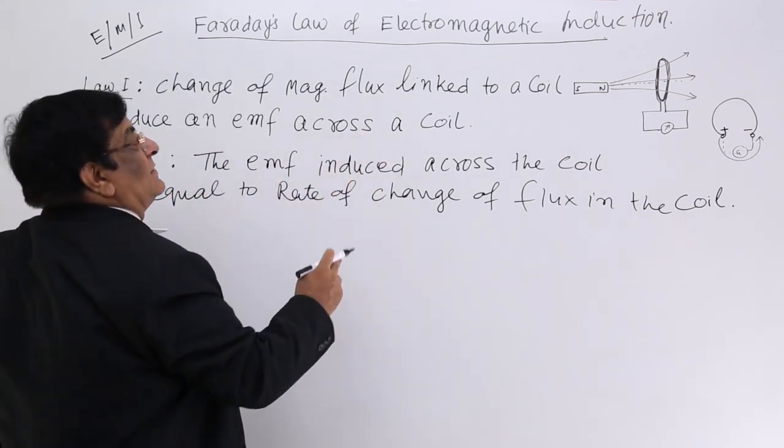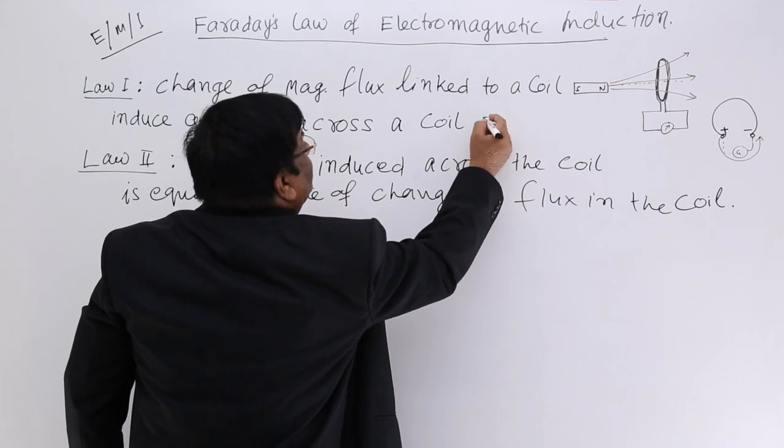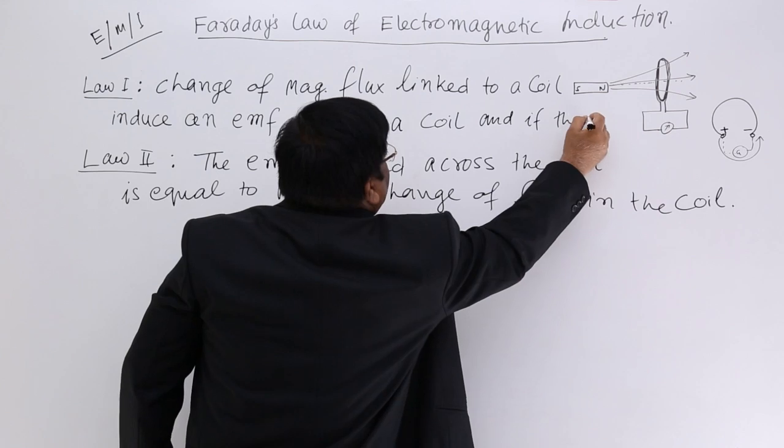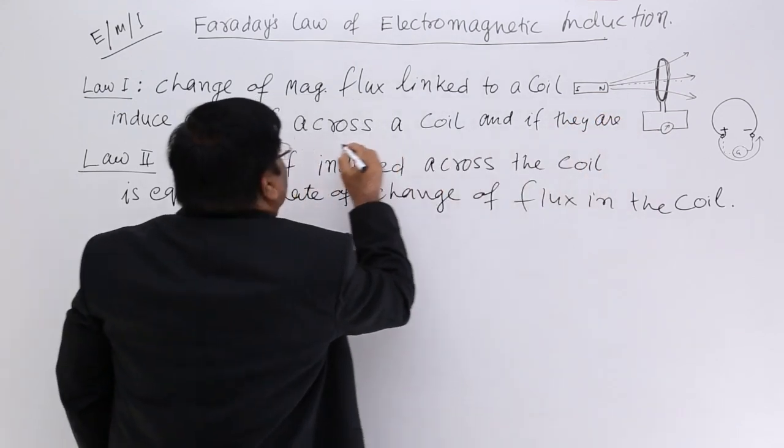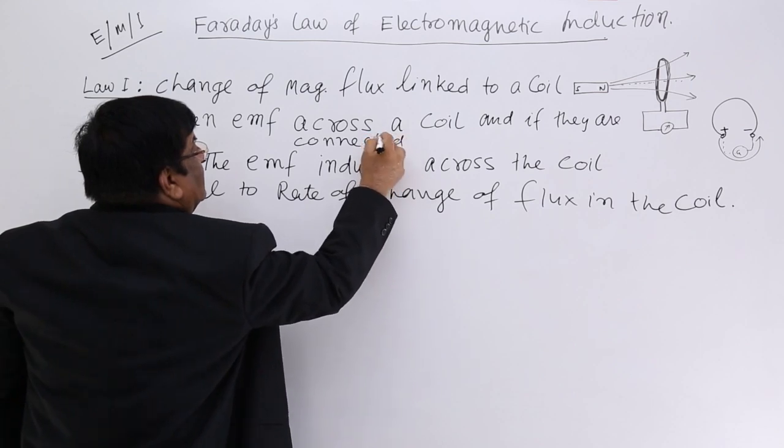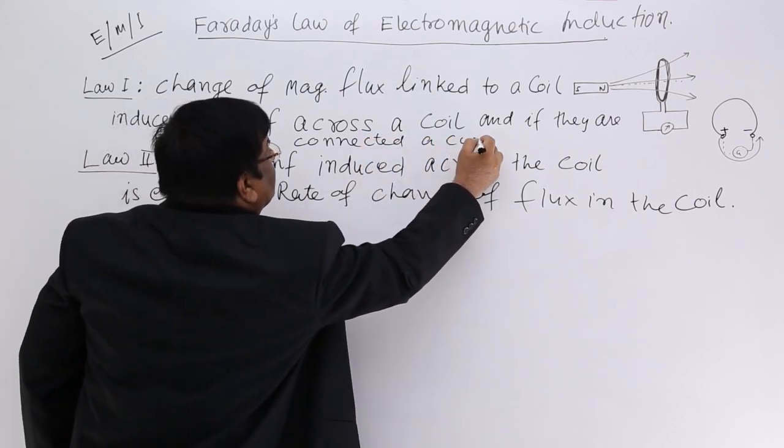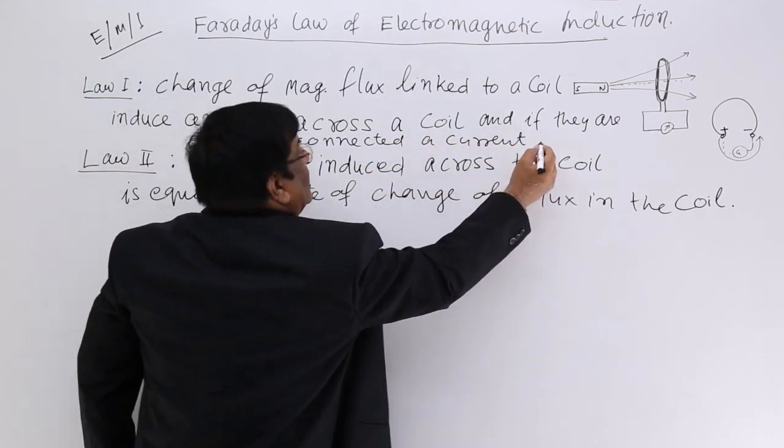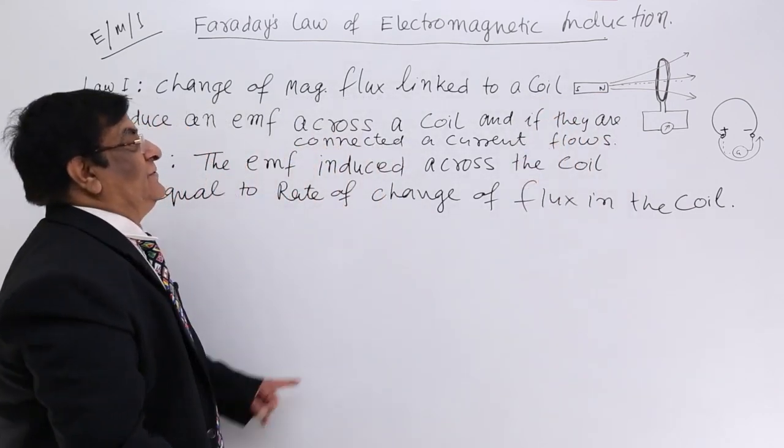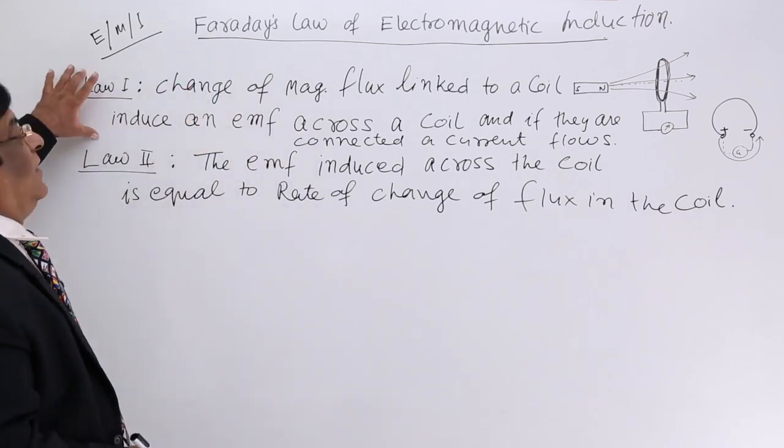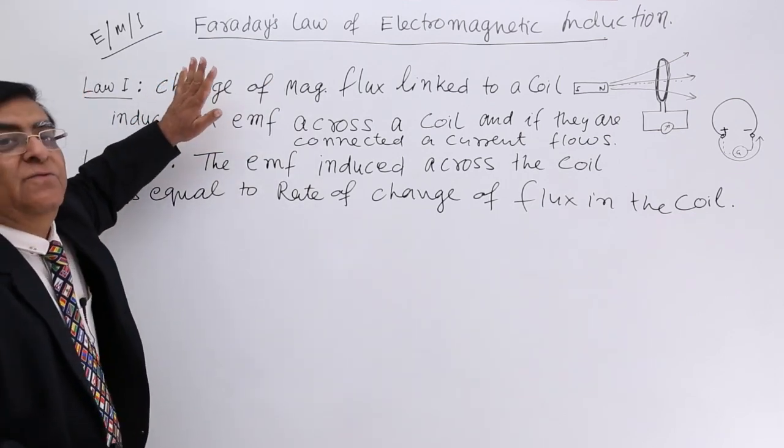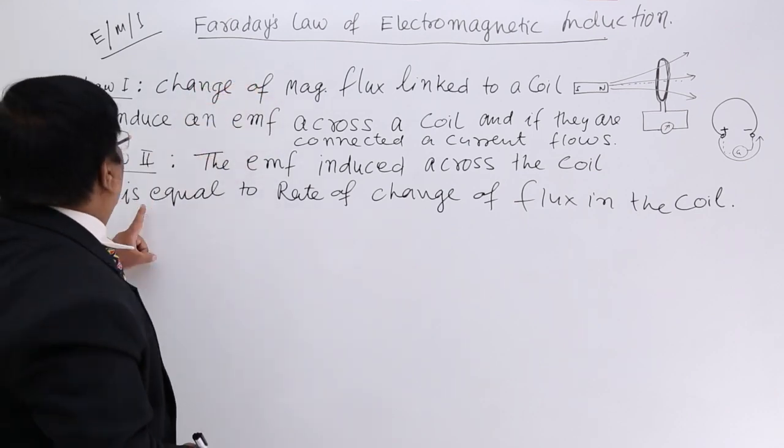Across a coil, and if they are connected, a current starts flowing. The current flows. This is what I explained to you. This is law one. Simply, what happens by doing what? Then law two.